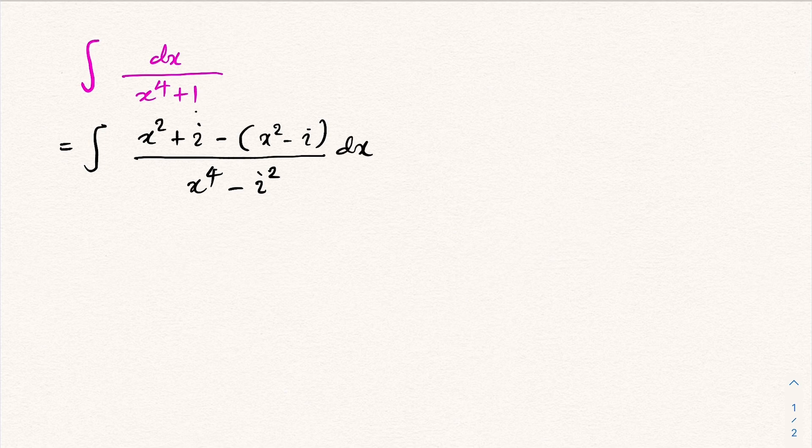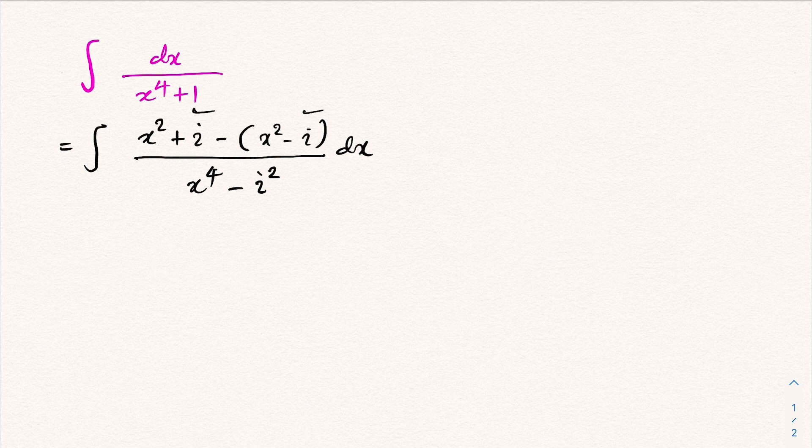Then we have minus minus, so plus, giving us plus two times i. So here, one over two times i.